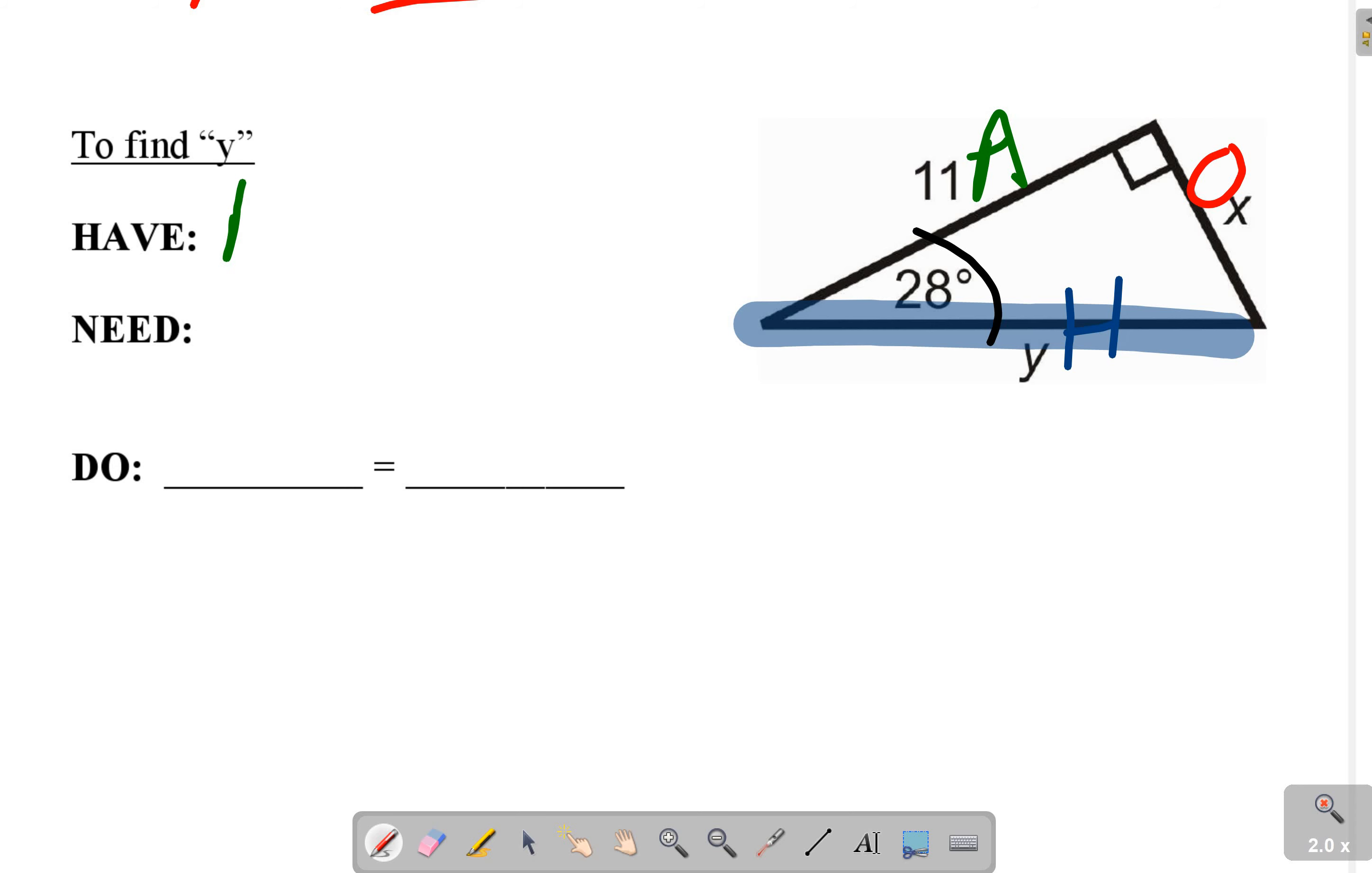In this case, we have the adjacent and we want the hypotenuse this time. So I have an adjacent-hypotenuse combo. That's cosine. So you write cosine theta over 1 equals adjacent, which is 11, over hypotenuse, which is y.